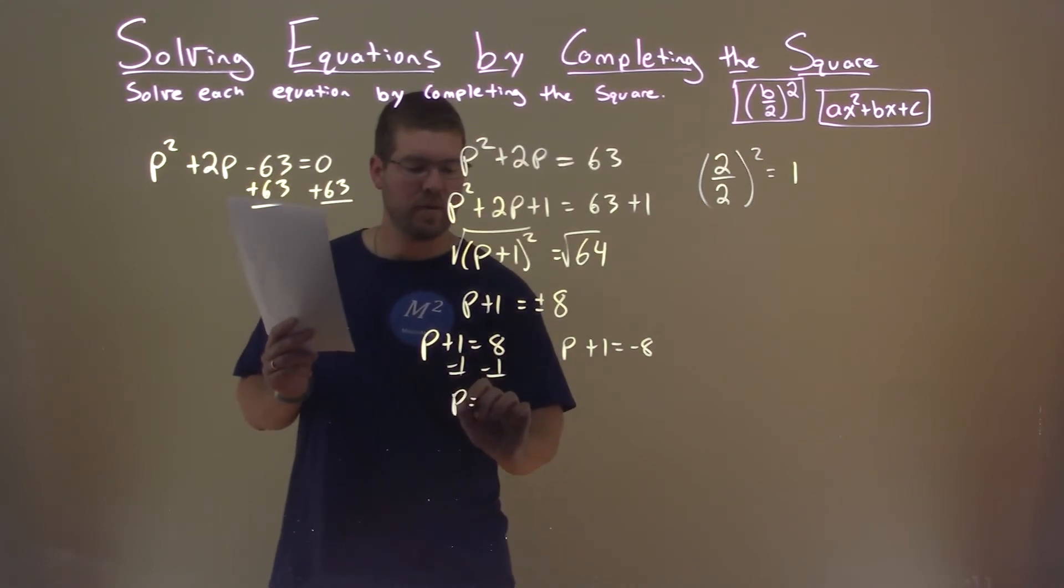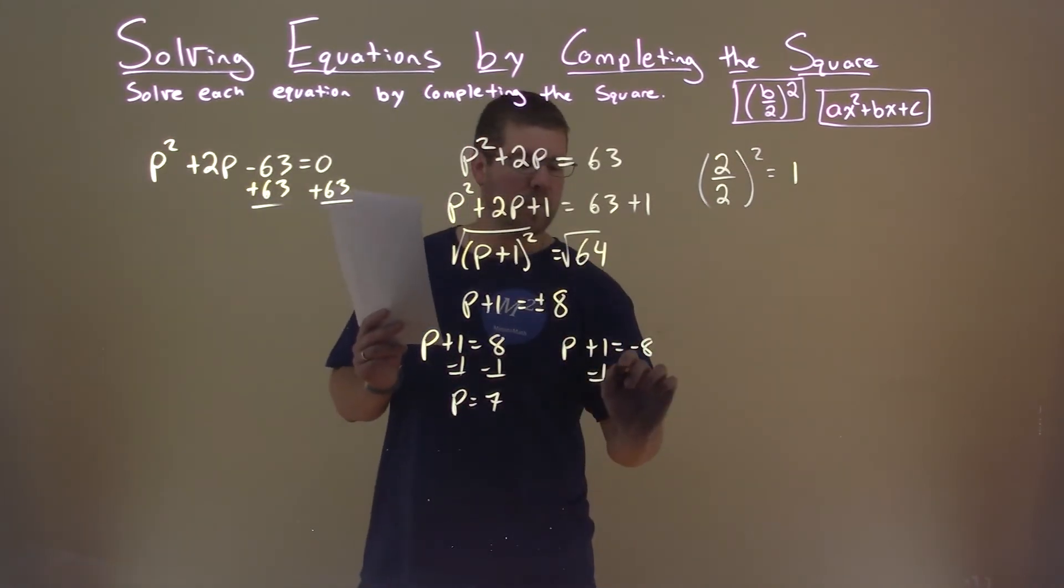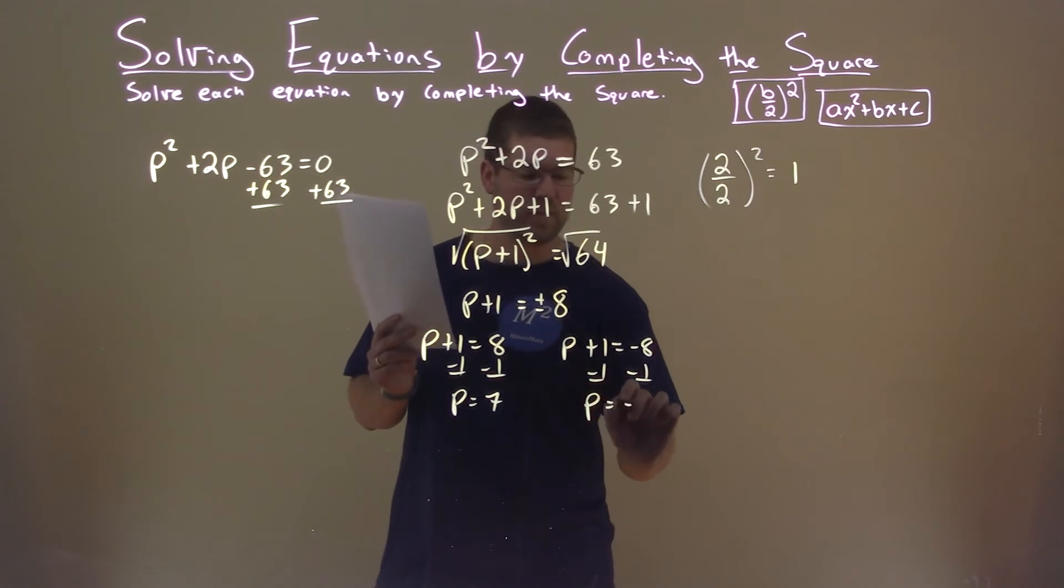Subtract the 1 on both sides, and p equals 7. Subtract the 1 on both sides here, and p equals a negative 9.